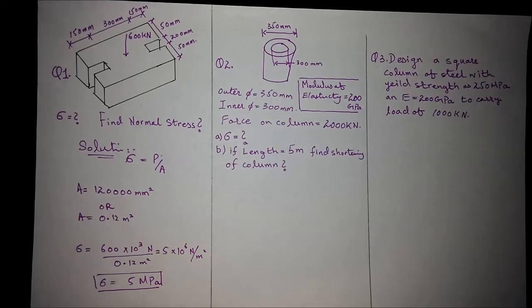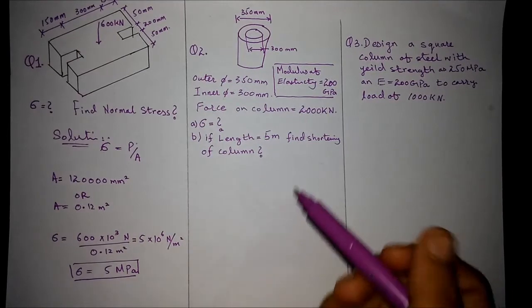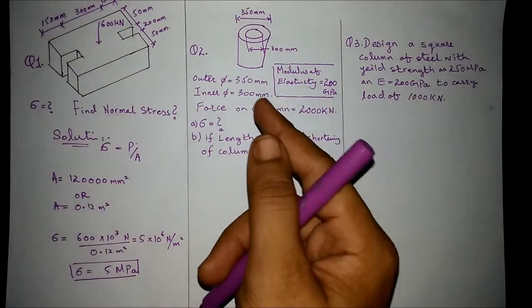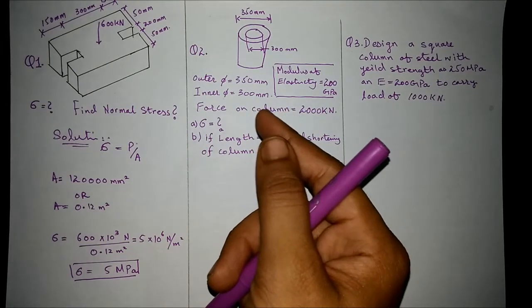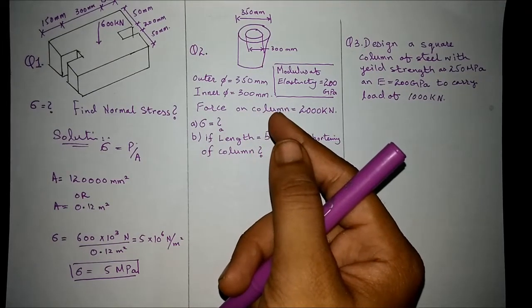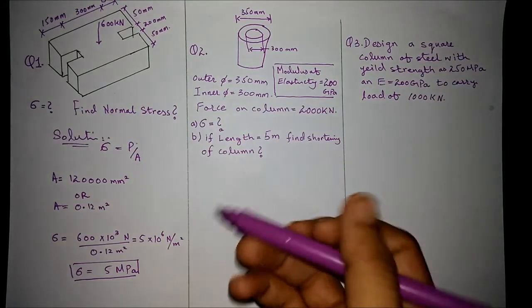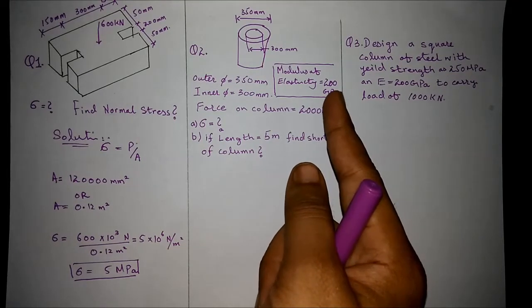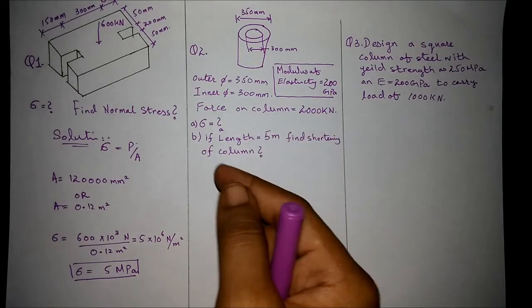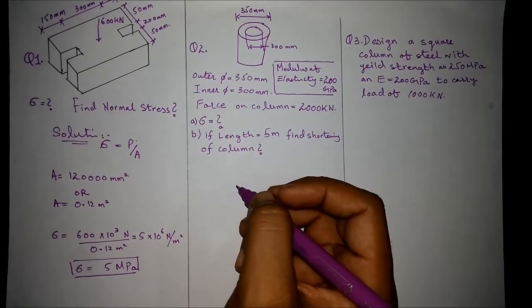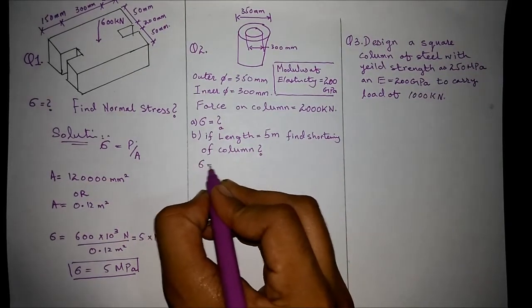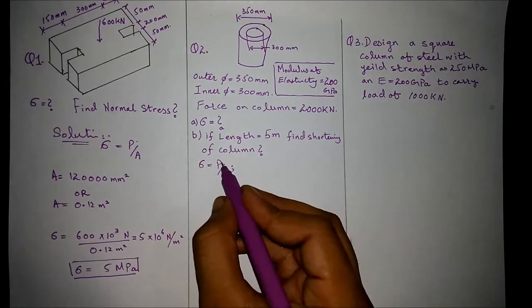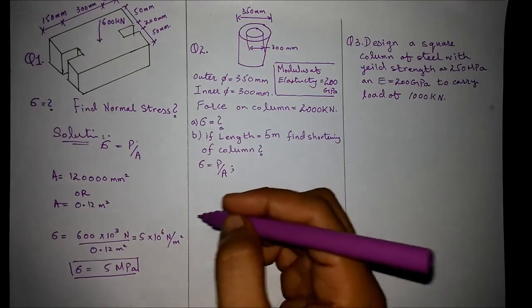Now have a look at example number two. It is a circular column. Given that its outer diameter is 350 millimeters, inner diameter is 300 millimeters, and the force on column is 2000 kilonewtons. The modulus of elasticity is given as 200 gigapascals. And in part A, we have to find out the stress. We know that stress equals force over area. For this formula, we are provided with force, but we need the area.